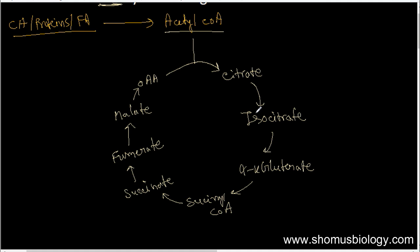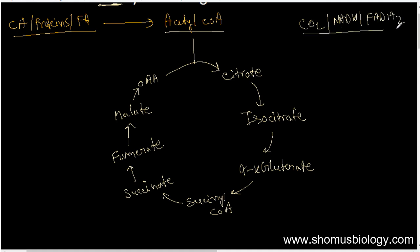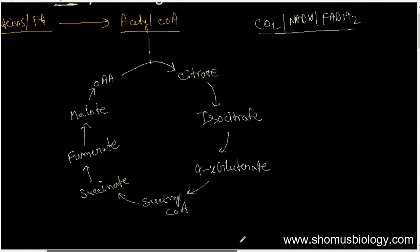The TCA cycle, using acetyl CoA as input, produces carbon dioxide, water, NADH, FADH2, and GTP. Let's talk about all these components and exactly where and when they are produced within the cycle.